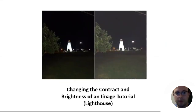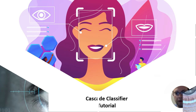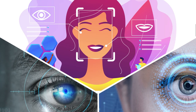Changing the contrast and brightness of an image tutorial. Here's an example of a lighthouse. On the left is before we changed the contrast and brightness of the image, and on the right is after. We'll cover the cascade classifier, which does things like face and eye recognition, and much, much more.